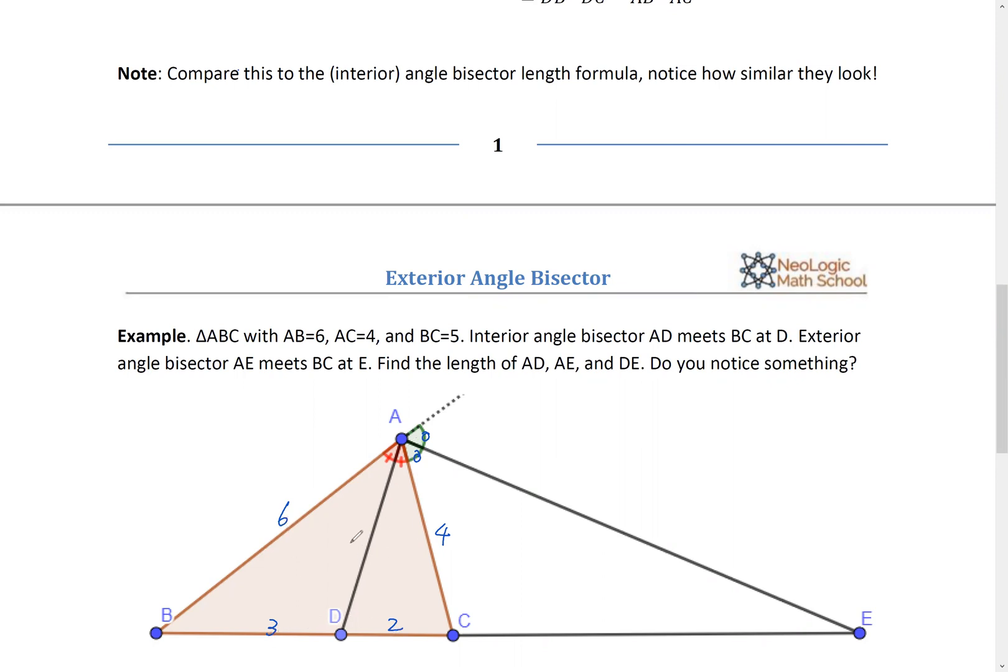And then so AD square. AD square equals six times four minus three times two, which is 18. All right. AD square is 18. Right. We got that.